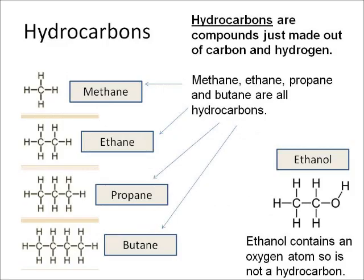You need to know the meaning of the word hydrocarbon. A hydrocarbon is a compound made out of only two elements: carbon and hydrogen. Looking at the diagram, methane, ethane, propane, and butane are all hydrocarbons because they're only made out of carbon and hydrogen. But if we look at ethanol, there's an oxygen atom, so it's not a hydrocarbon.